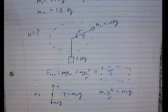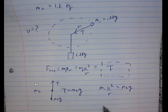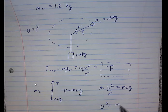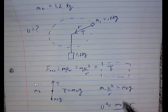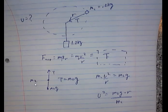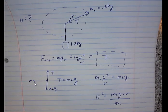Now that we know tension equals M2 × G, plug it into the circular motion equation for mass one: M1 × V²/r = M2 × G, so V² = M2 × G × r / M1, and then take the square root to get V. There are 13 questions total — some relatively simple, some quite hard. Email me if you have any questions and I'll talk to you soon. Bye.